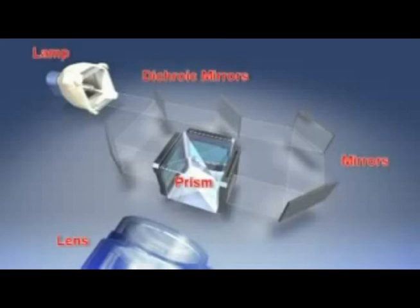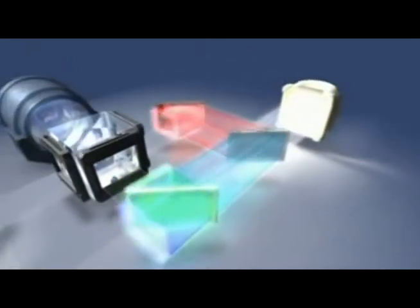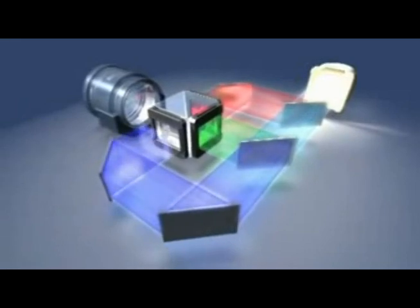Aside from the LCD chips, other key components of the 3-LCD system are the lamp, the dichroic mirrors, the mirrors, the prism and the projection lights. White light produced by the projector's lamp is broken by the dichroic mirrors into the 3 primary colors of light: red, green and blue.